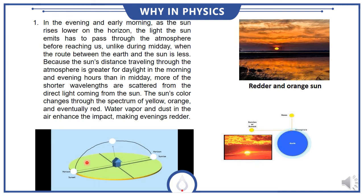At midday, the light travels a shorter distance through the atmosphere. All seven colors reach us equally, so we see white light.